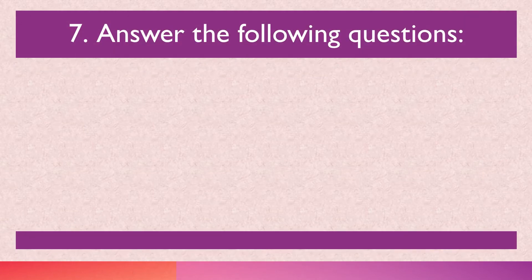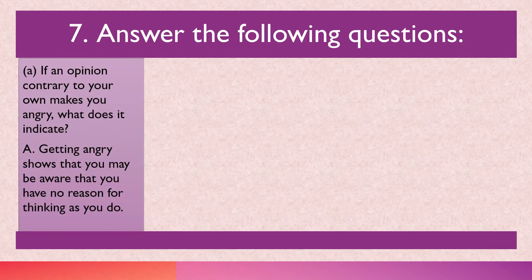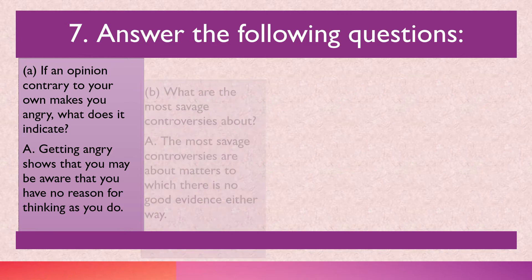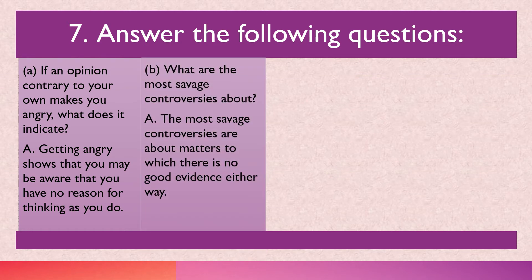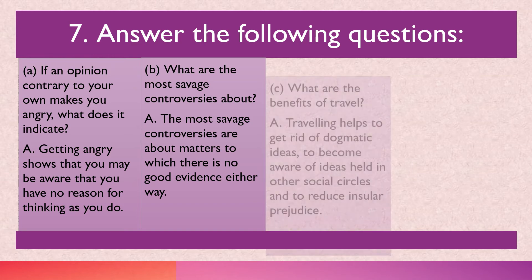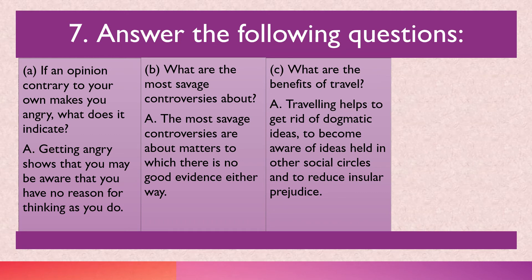If an opinion contrary to your own makes you angry, what does it indicate? Getting angry shows that you may be aware that you have no reason for thinking as you do. The most savage controversies are about matters to which there is no good evidence on either side. The benefits of travel: traveling helps to get rid of dogmatic or fixed ideas, become aware of ideas held in other social circles, and reduce insular prejudice.